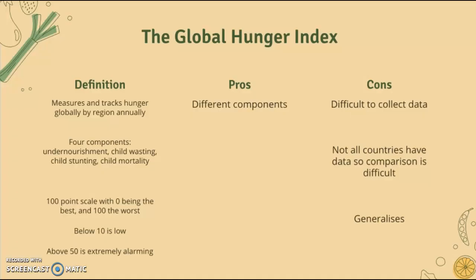The Global Hunger Index is on a 100-point scale with zero being the best and 100 being the worst. Below 10 is considered a low hunger index, and above 50 is considered extremely alarming.